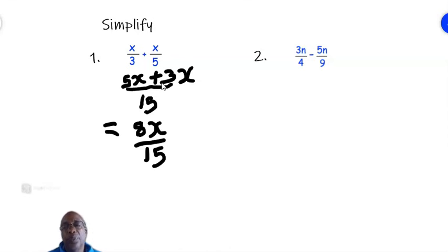So let's go to number 2. We have 3n over 4 minus 5n over 9. We drop the line underneath. And you find the LCM of 4 and 9 which is 4 times 9. That is 36.